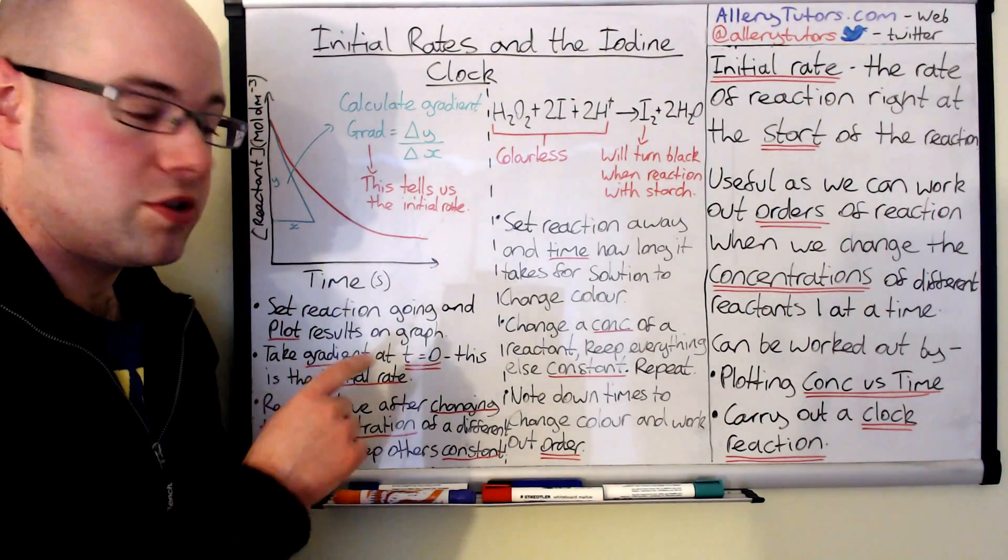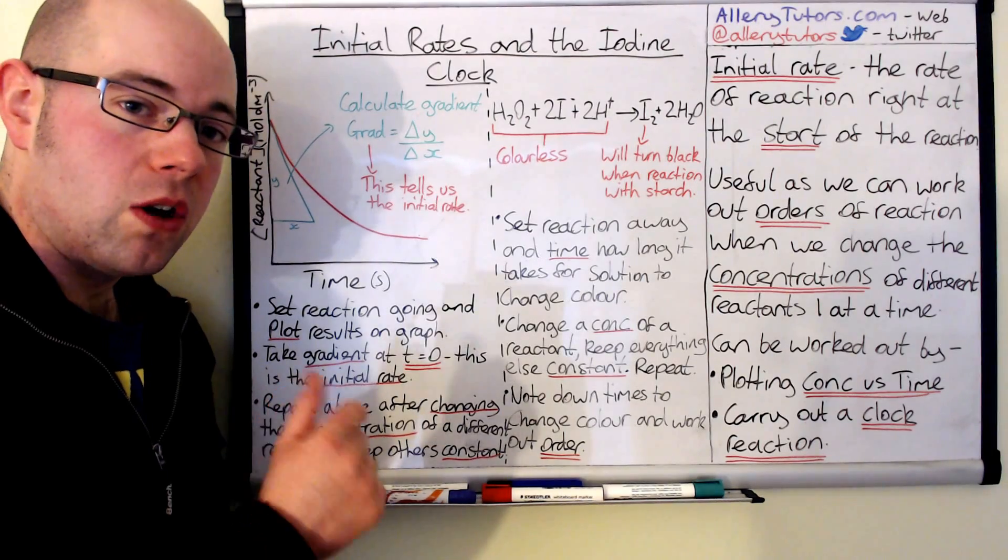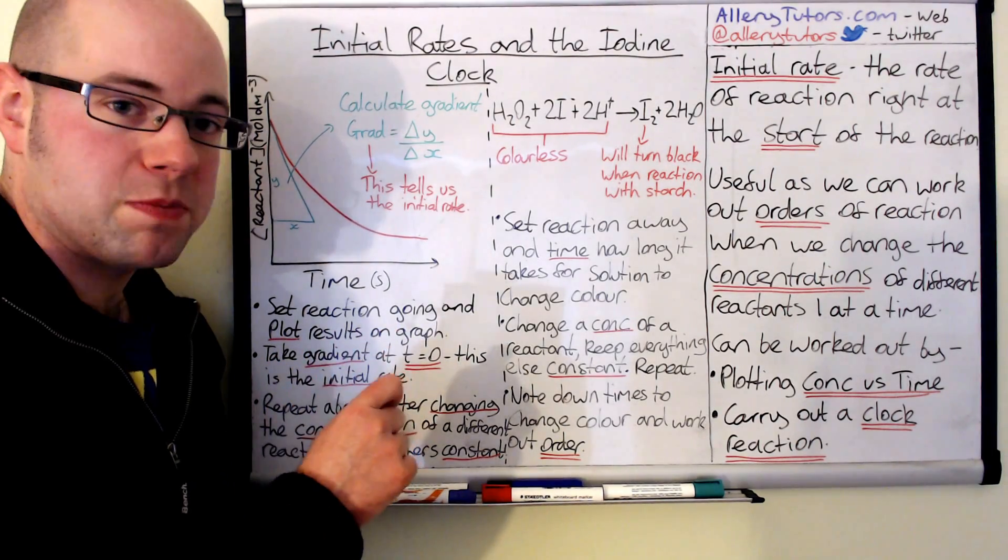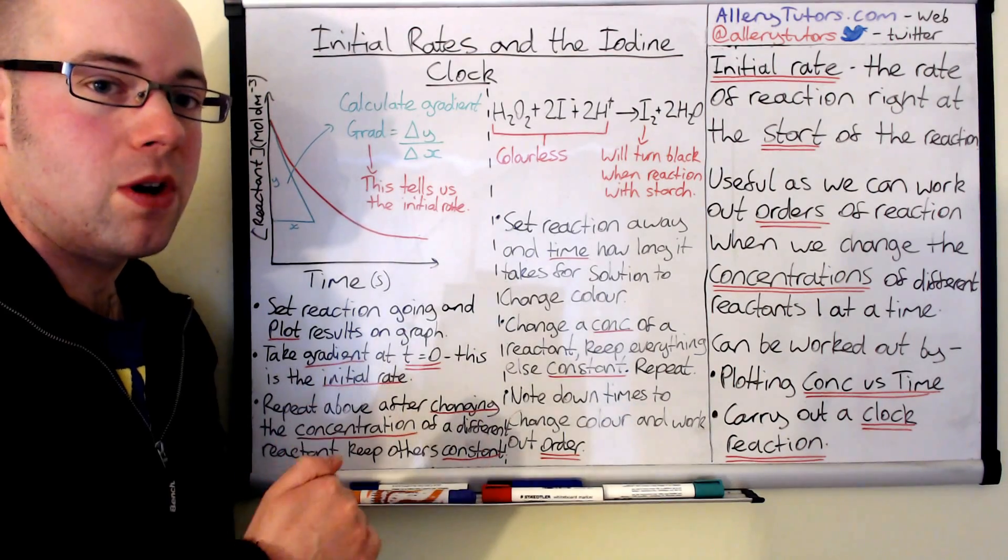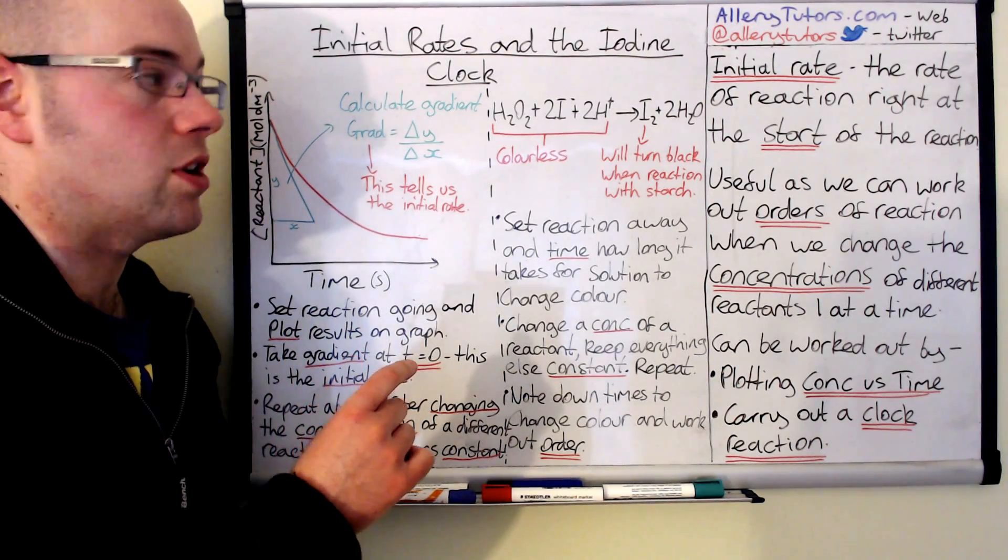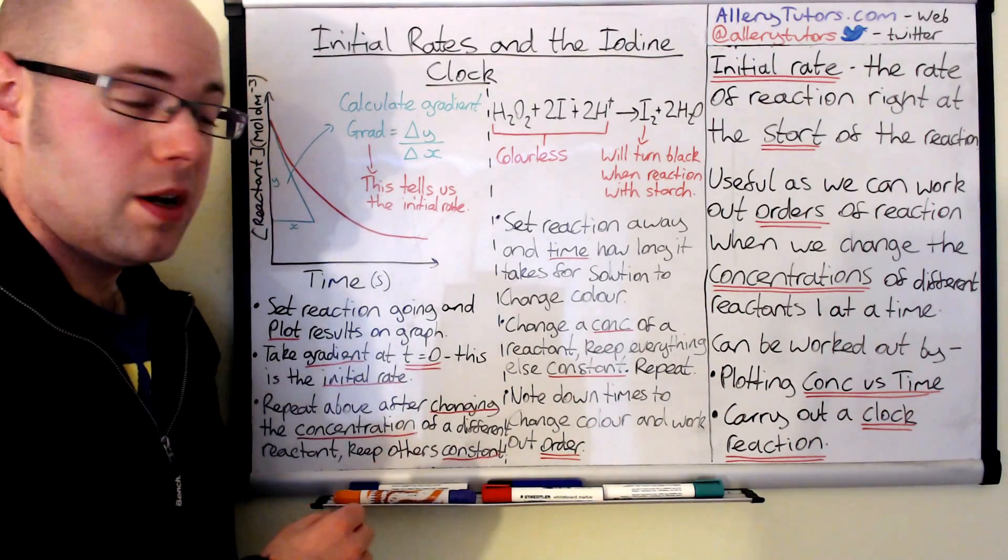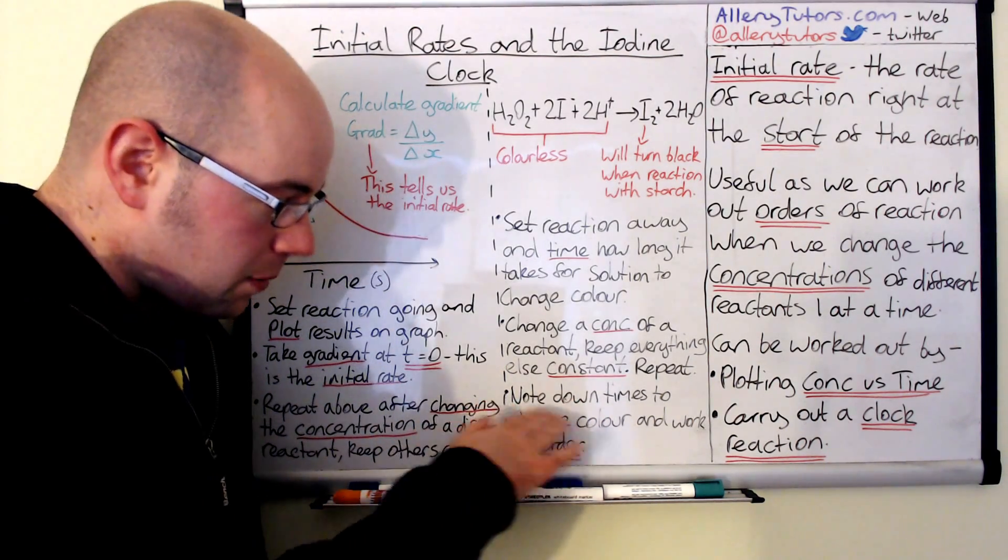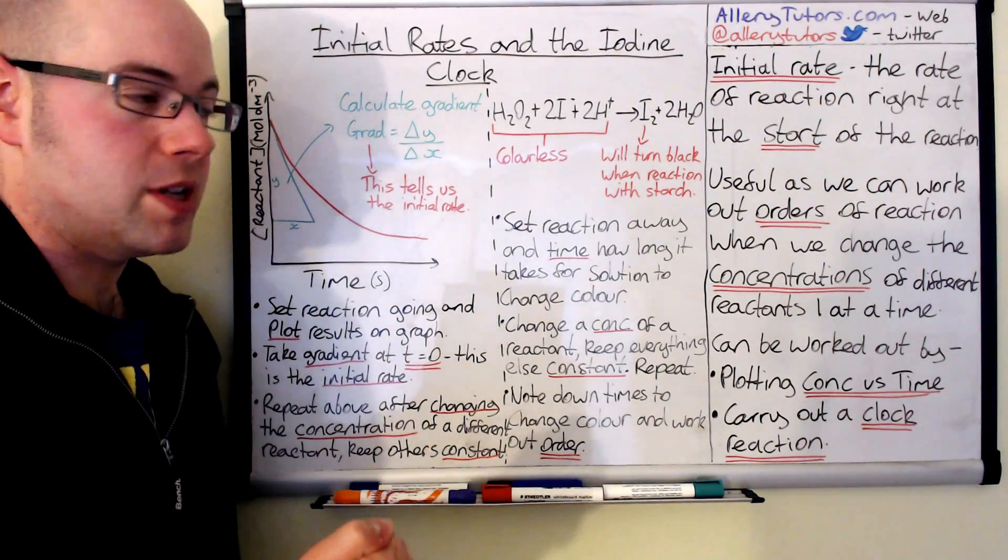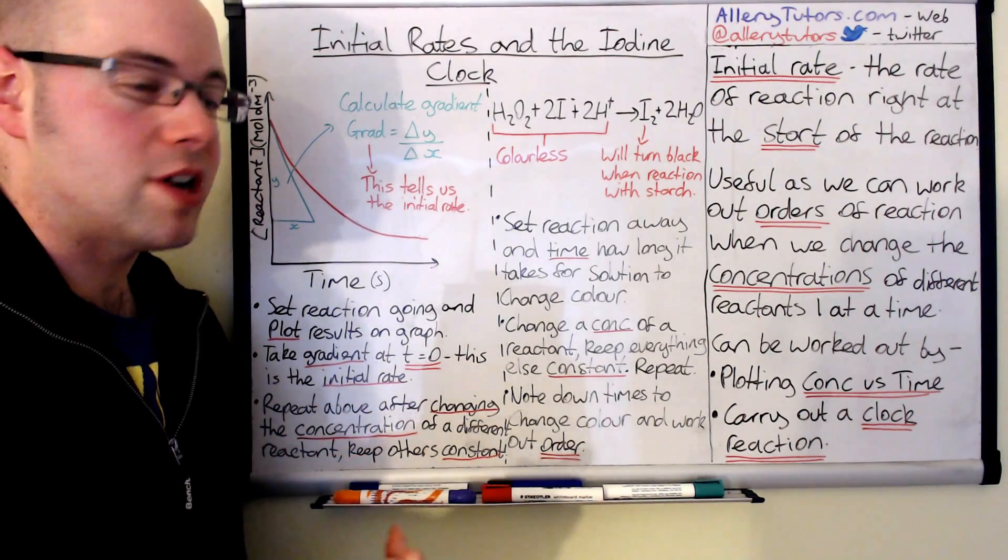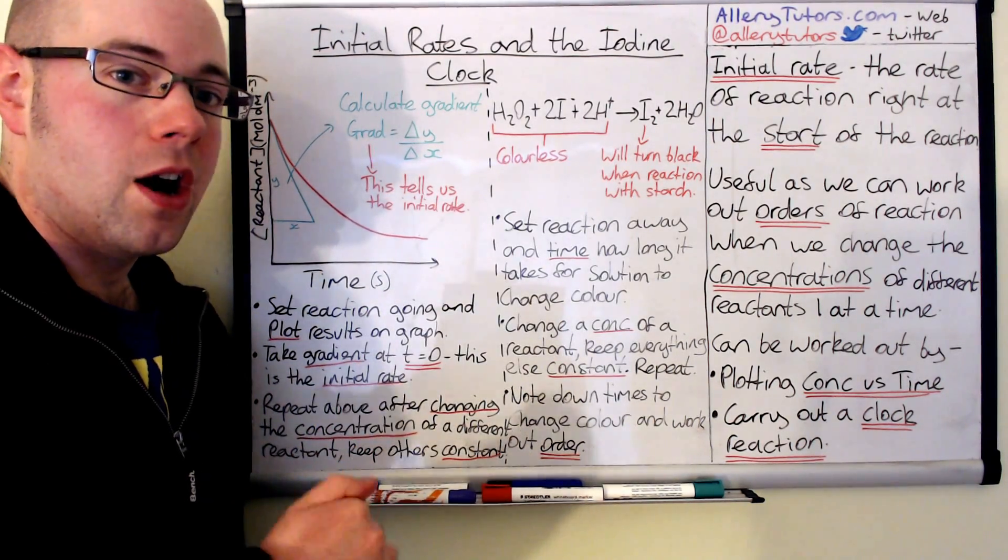What we can do, just like the previous method, is we can alter the concentrations of our reactants, repeat the experiment, and again measure how long it takes for that black colour to appear. Like with the previous one, we can then measure that time, compare it with the previous time, and see what effects if any the change in concentration of your reactants has had on the initial rate. That allows us to work out the order of the reaction if it's zero, first, second order, etc.